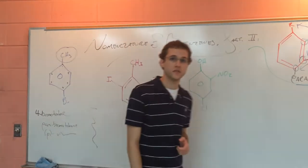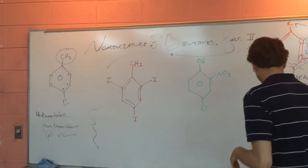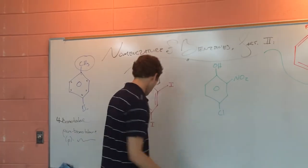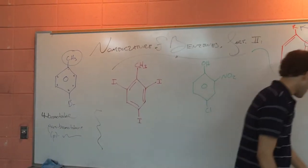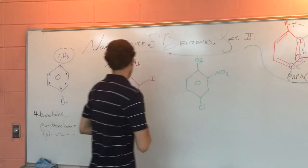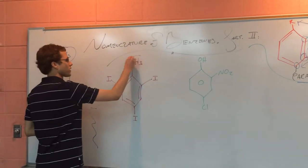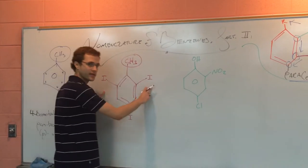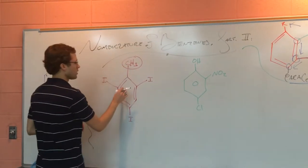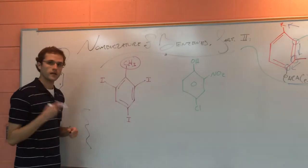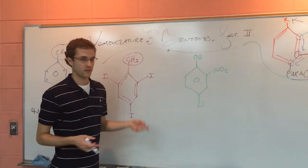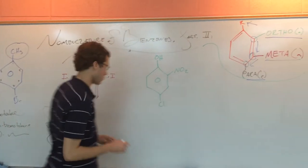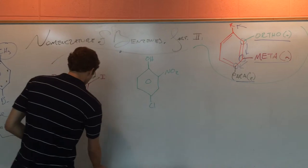We have CH3 attached to this benzene, so this is going to be another toluene again. We've got CH3 — this is another toluene — and we have three iodine atoms attached. We know we've got more than just a couple of things here, so we're not going to be able to use the ortho/meta/para system. So we need to number this.